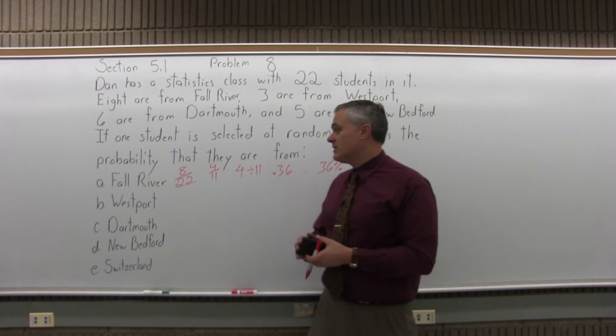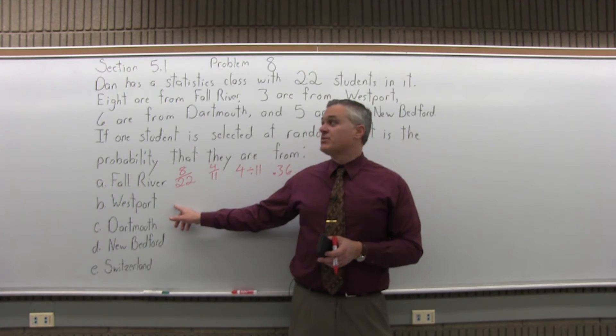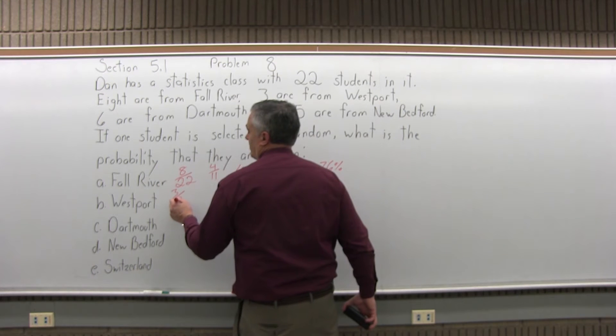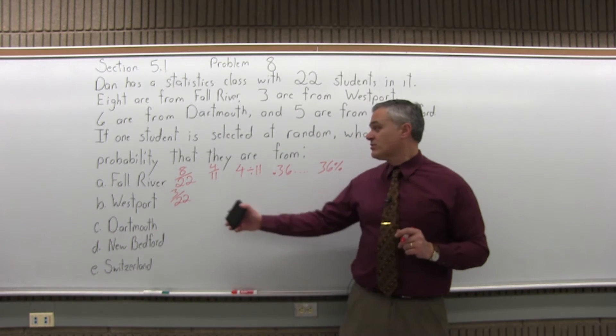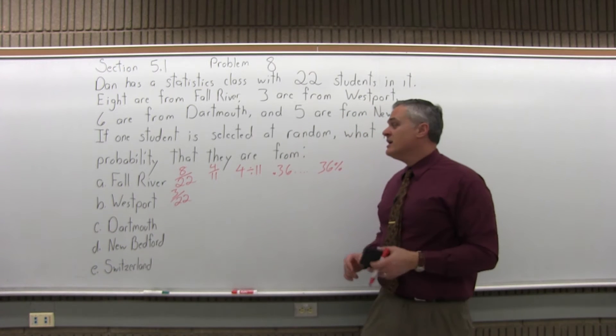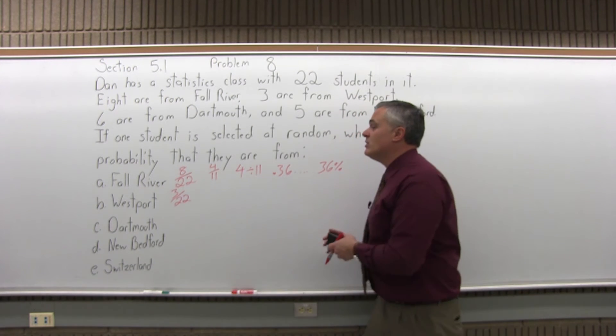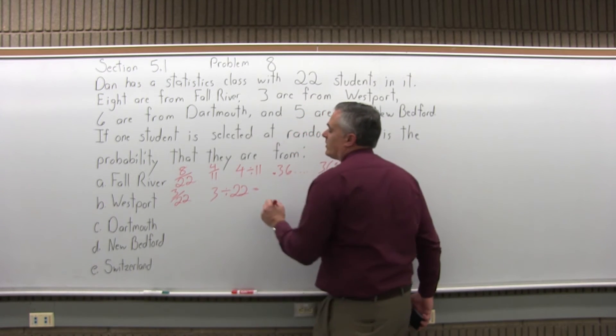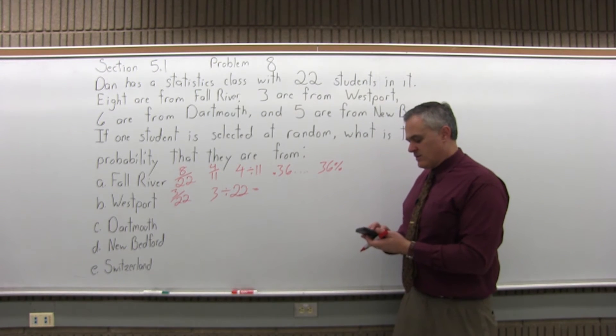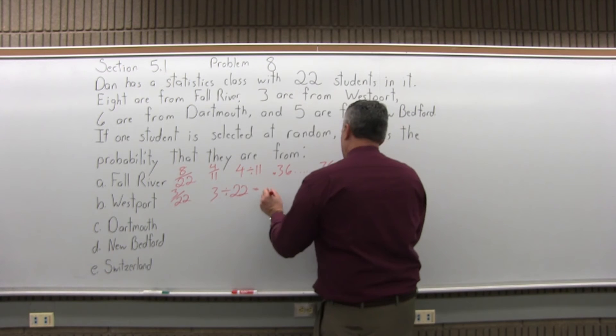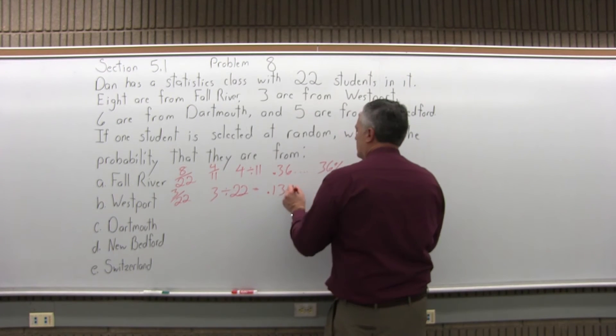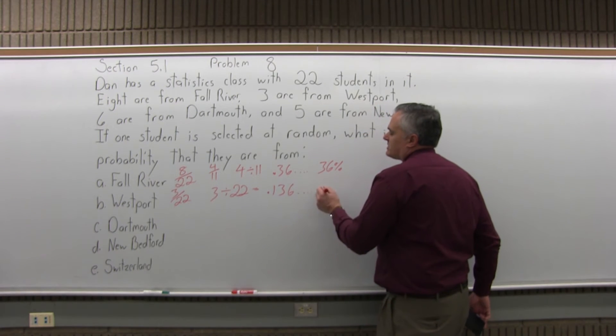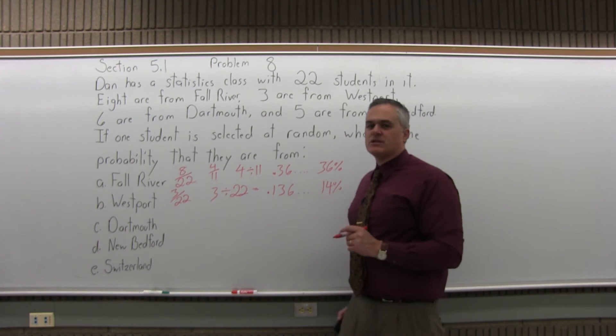Now Westport, what's the probability that a randomly selected student would be from Westport? Well, how many are from Westport? Three of them out of 22. So the probability would be 3 over 22. Three from Westport out of 22 altogether. This one doesn't reduce. You could leave it just like that. Or if you like decimals better than fractions, you get the decimal pretty quick. Take a calculator. Three divided by 22 equals, and it is .1363636. The three-sixes repeat forever. And that's almost 14%, 13 and a half to 14% probability.